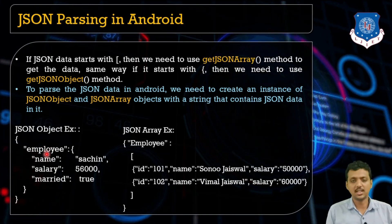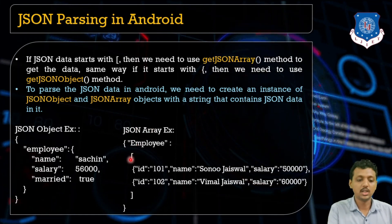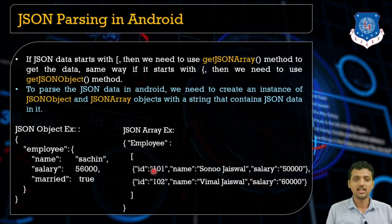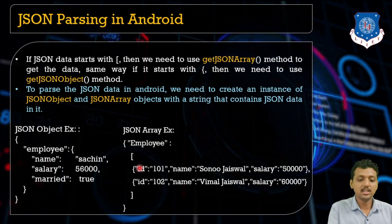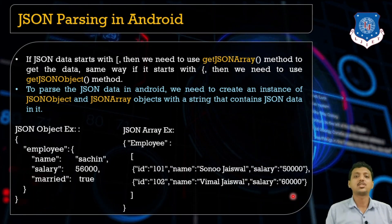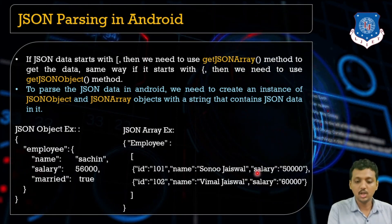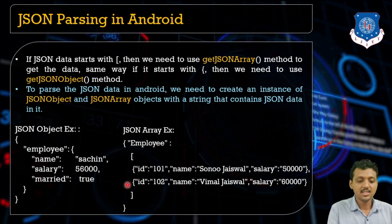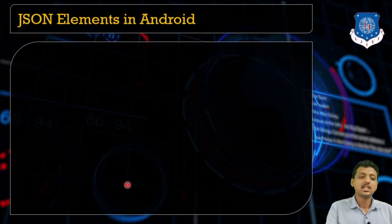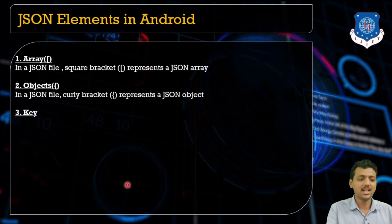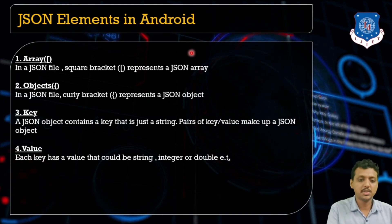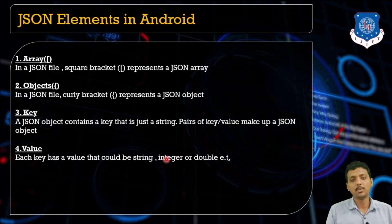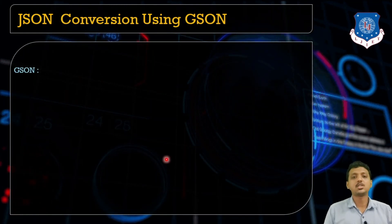For a JSON array, you use square brackets. The 'employee' object becomes an array, where the array name is 'employee' and values like id, name, and salary are stored inside it. The curly bracket shows the object and the square bracket shows the array. Just like a regular array, the first index starts at 0 and the second at 1. Key is always a string and value is always in string form.